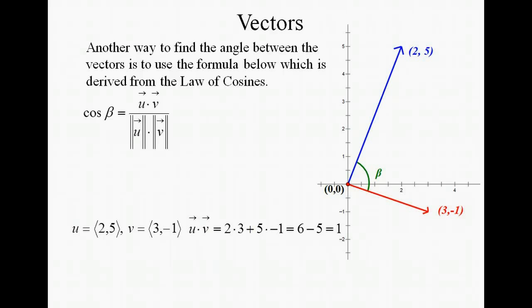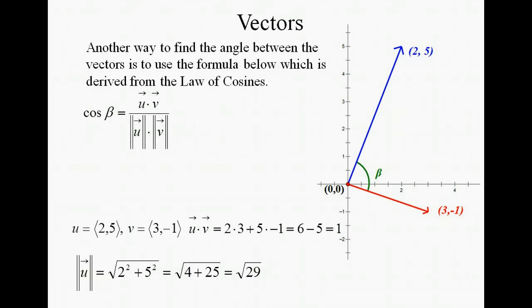Then we're going to find the magnitude of the two vectors, so let's start with vector u. Using our distance formula, we have the magnitude of vector u as the square root of 2 squared plus 5 squared, or the square root of 29. Doing the same thing for the other vector, we end up with the square root of 10.